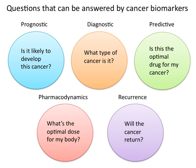Cancer biomarkers, particularly those associated with genetic mutations or epigenetic alterations, often offer a quantitative way to determine when individuals are predisposed to particular types of cancers.